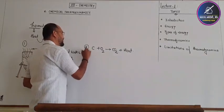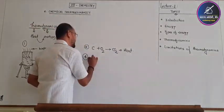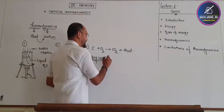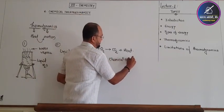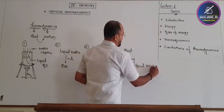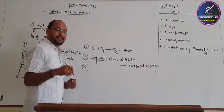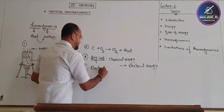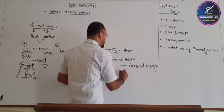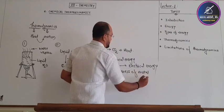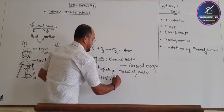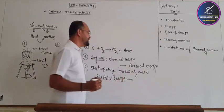Let's take another example. If we consider a battery, in the battery chemical energy is converted into electrical energy. Or if we consider an electrolytic process of a metal, in this process electrical energy is converted into chemical energy.